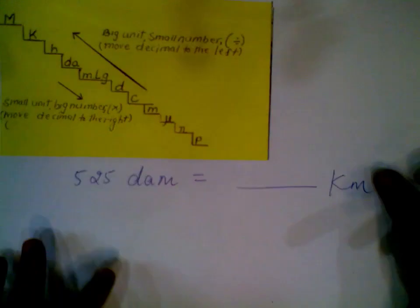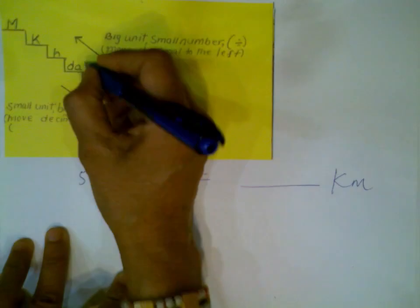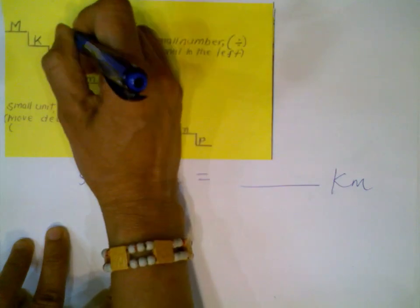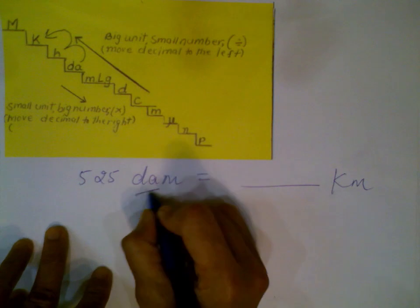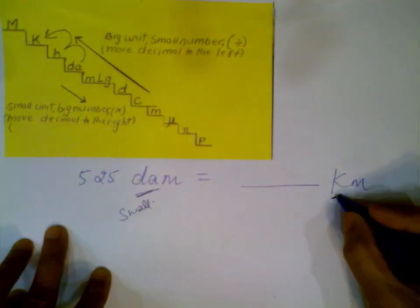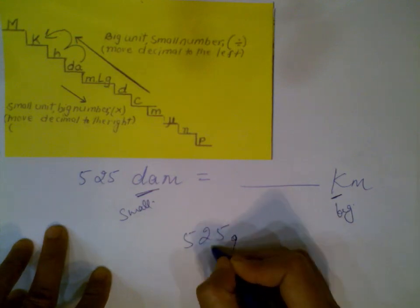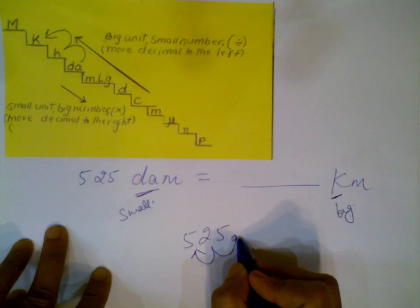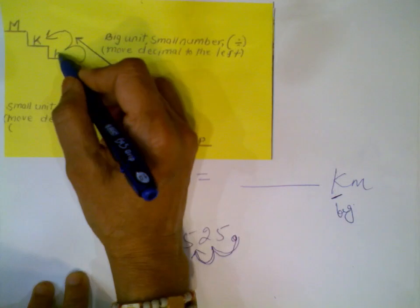Next: convert 525 decameters to kilometers. On the stair step, deca is here and kilo is two steps up. Moving two places to the left: from deca to hecto is one, from hecto to kilo is two. So 525 decameters equals 5.25 kilometers.